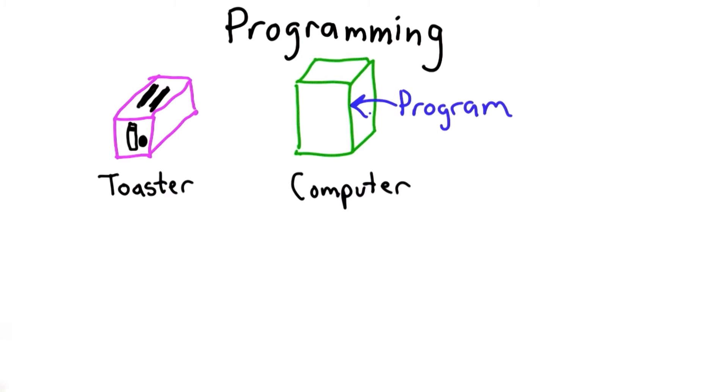The computer by itself doesn't know how to do anything. It has a few simple instructions that it can execute. To make a program do something useful, we need to put those instructions together in a way that does what we want.